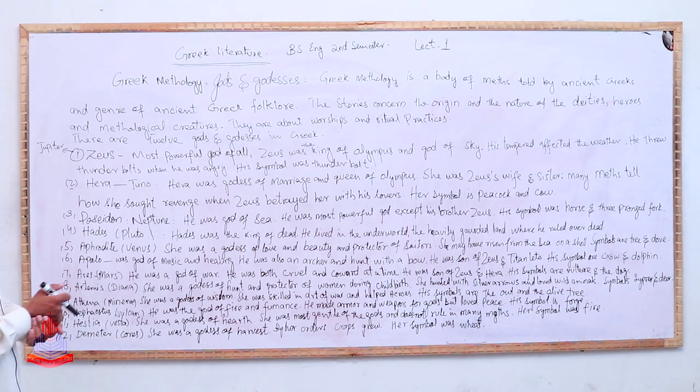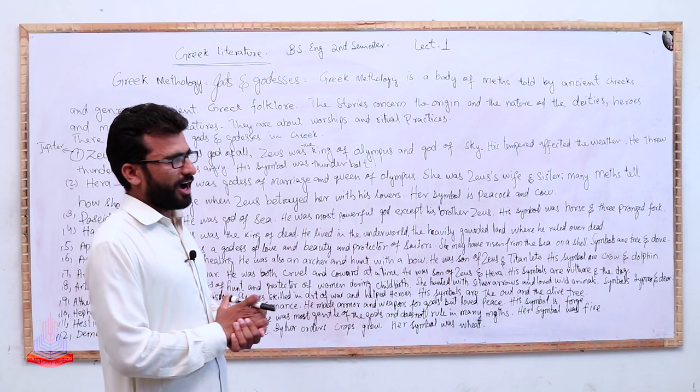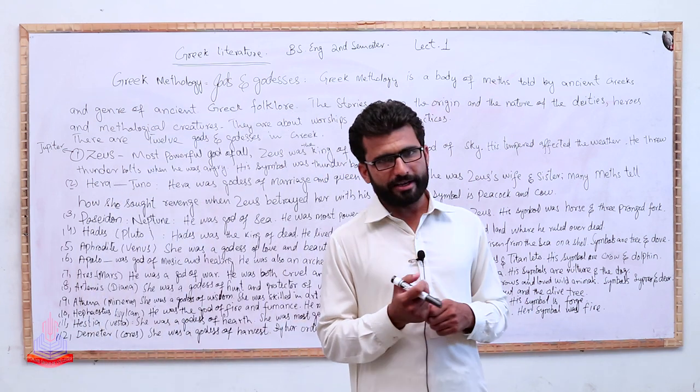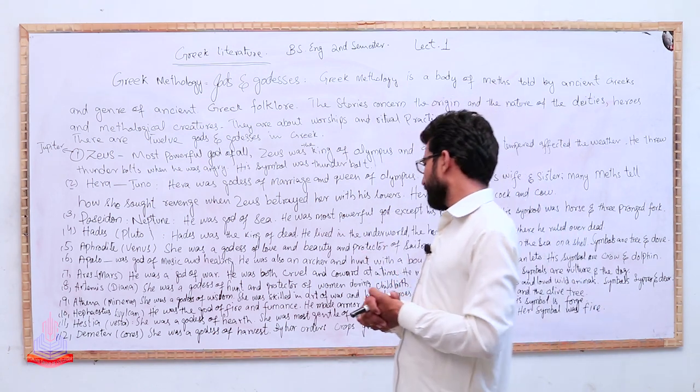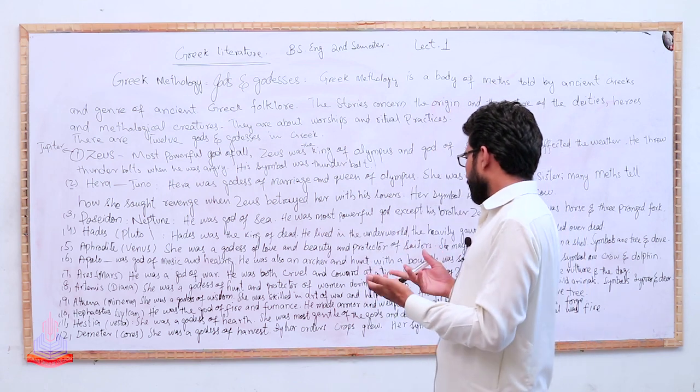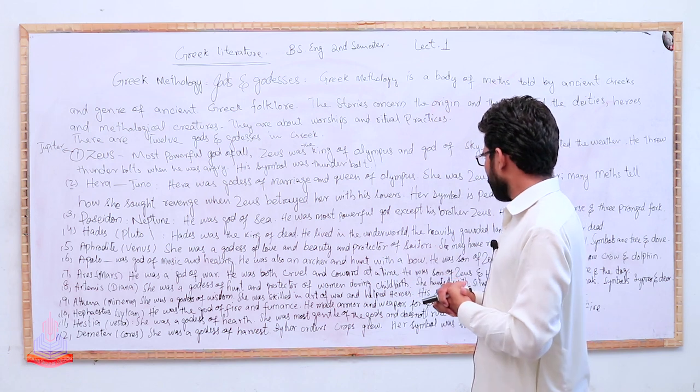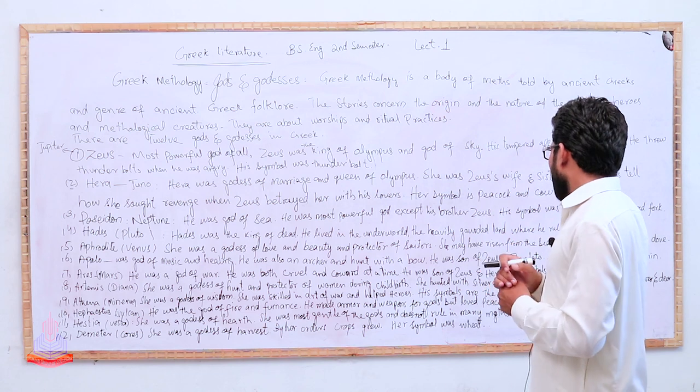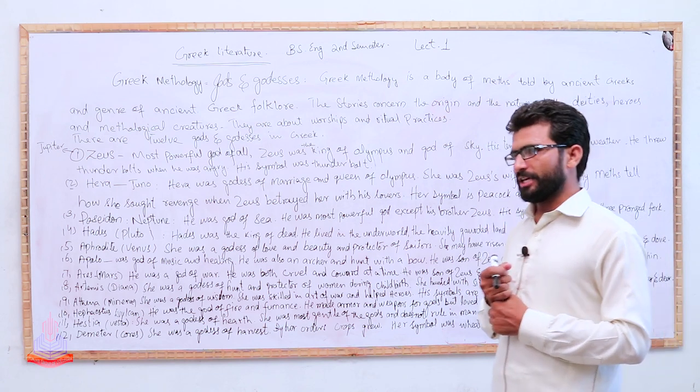Demeter was the goddess of harvest, and by her orders the growth or decrease of crops would happen. According to Greek mythology, her symbol was wheat.